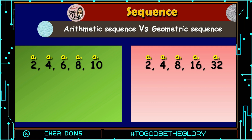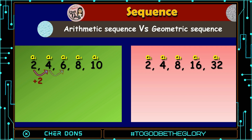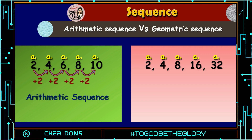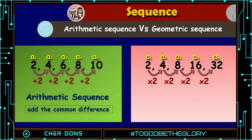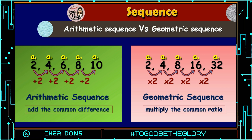What did you observe? In the first sequence, you add 2 to get the next term: 2+2=4, 4+2=6, 6+2=8, 8+2=10. So it is an arithmetic sequence because we add a common difference to get the next term. On the other hand, in the second sequence we multiply by 2: 2×2=4, 4×2=8, 8×2=16, 16×2=32. It is a geometric sequence because we multiply the preceding term by the common ratio to get the next term.